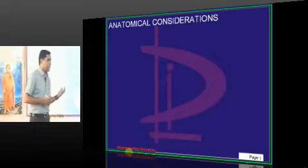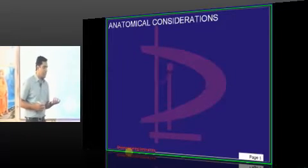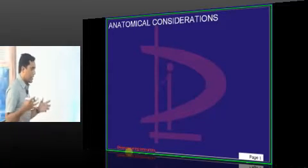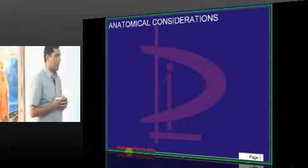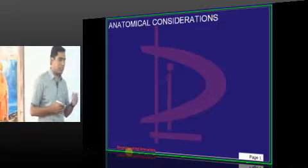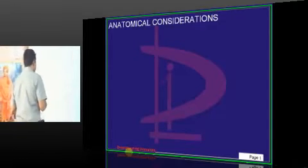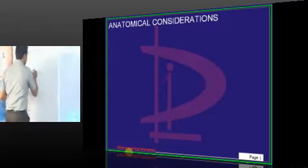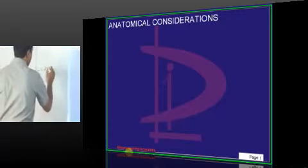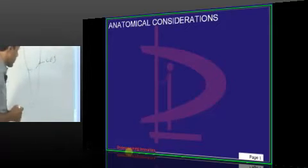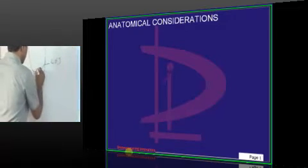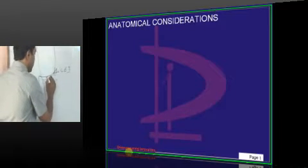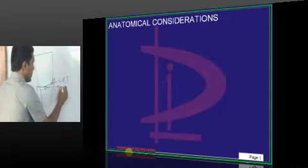Gingiva is what surrounds the tooth structure like a collar or a band. Gingiva covers the tooth structure at the level of the cementoenamel junction. In a normal individual, the gingiva will be around 2 millimeters above the CEJ.